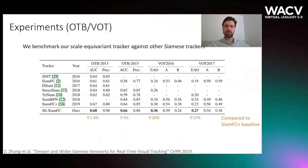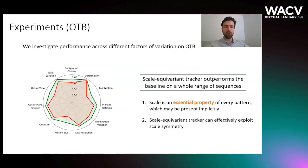Next, we conduct benchmark experiments to compare the scale equivariant tracker with other popular Siamese architectures. In this work, we build on top of the recently introduced CMFC+. Making the tracker scale equivariant brings a 3% increase on OTB and more than 17% boost in expected average overlap on VOT benchmarks, indicating the benefit of scale equivariance in visual object tracking. Our scale equivariant tracker outperforms the baseline across a whole range of sequences, even on those where no overt scaling occurs. We attribute this to the fact that scale is an essential property of every image which may be present implicitly at a pattern level, and our model can effectively exploit this symmetry.